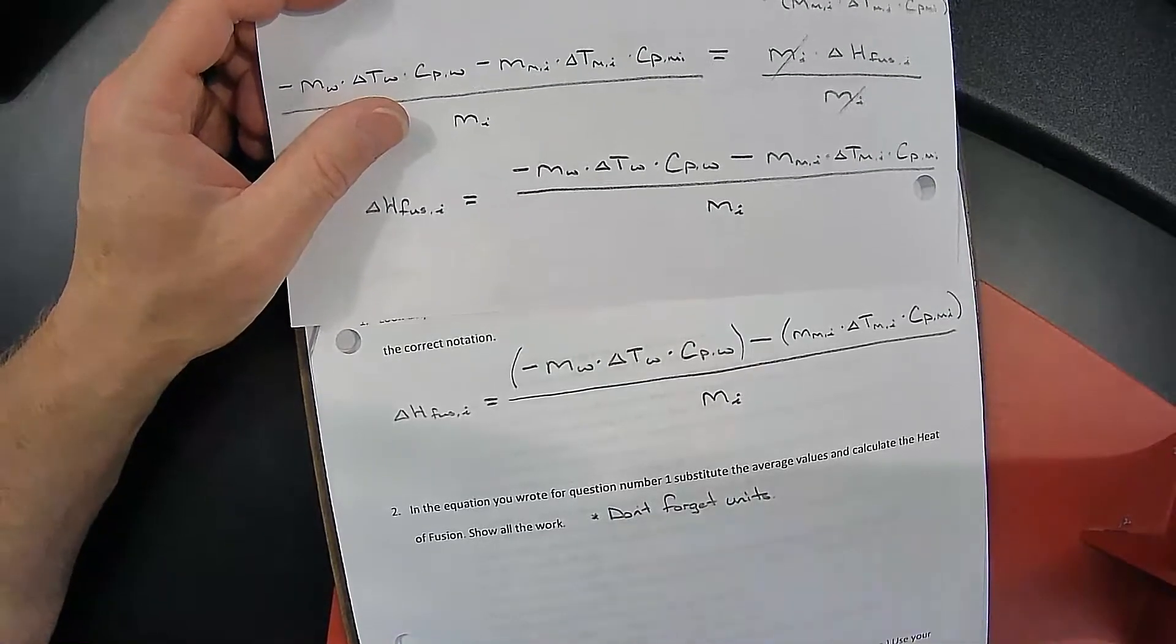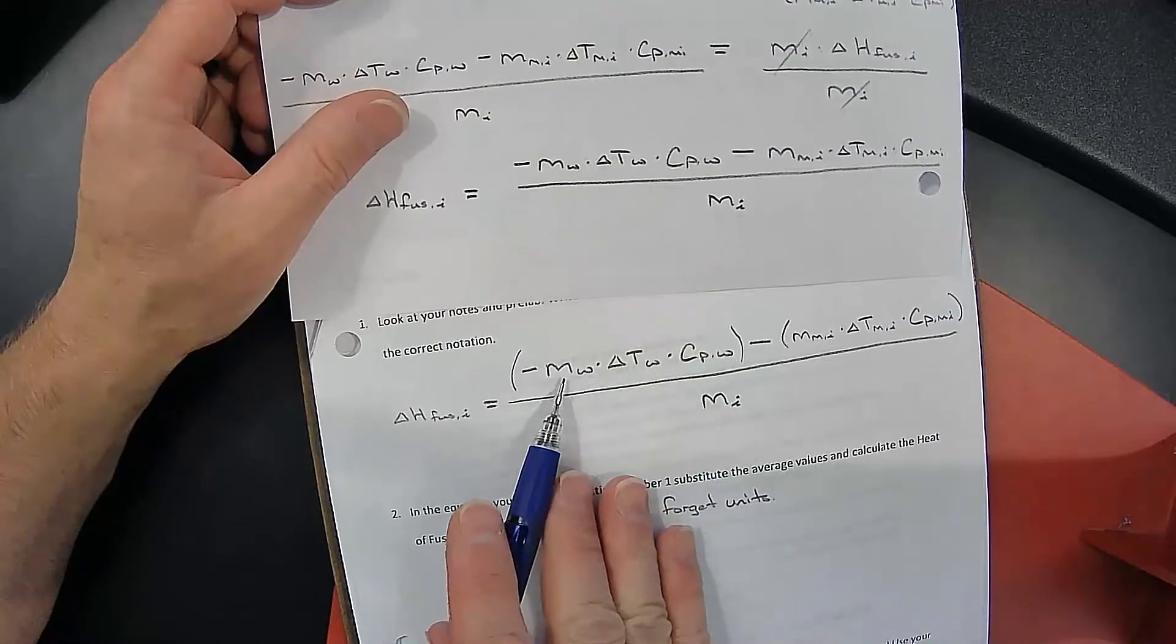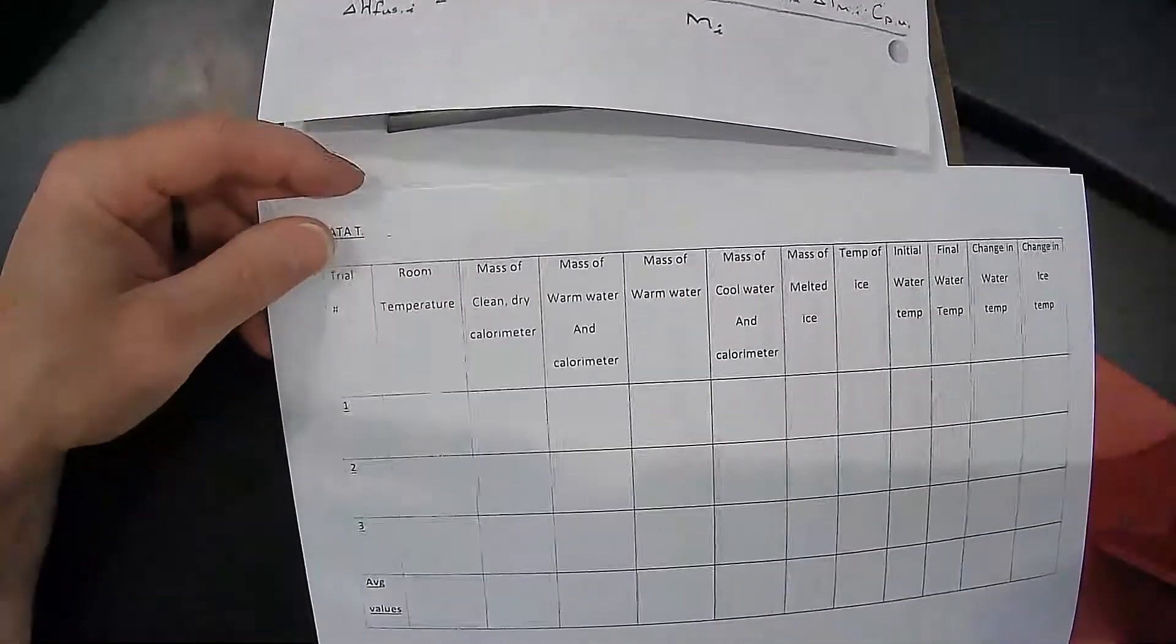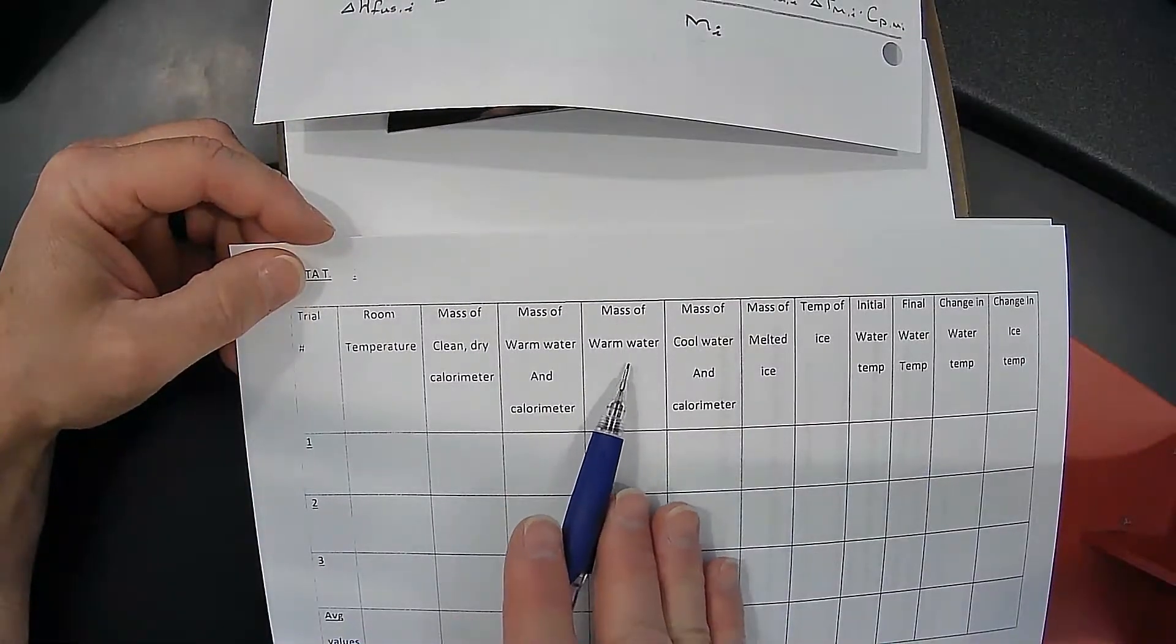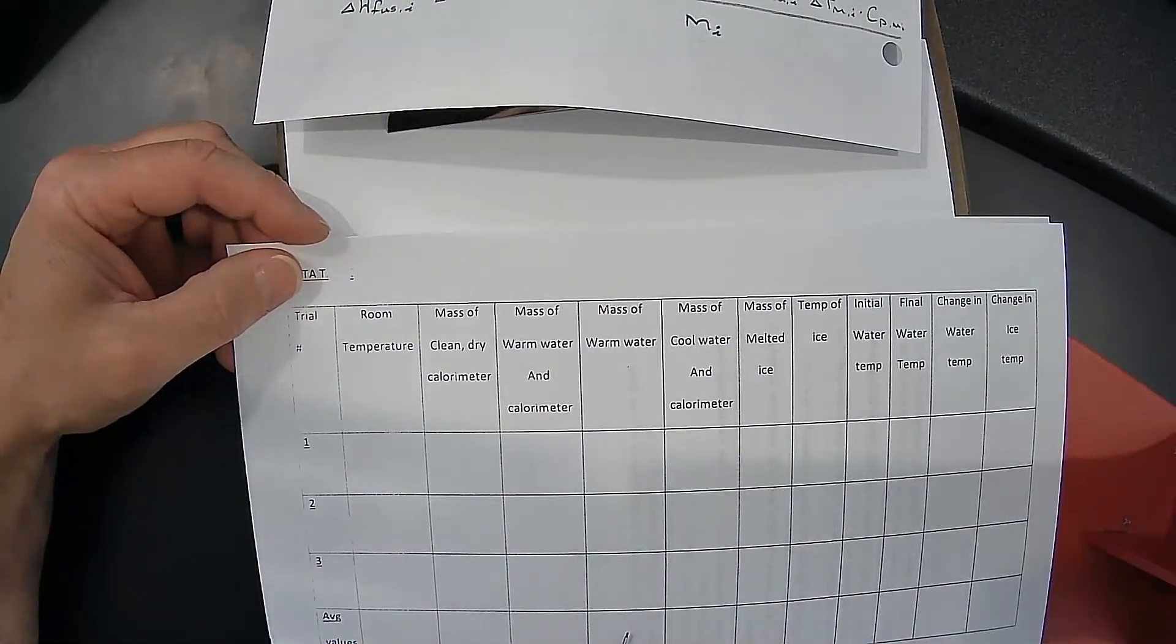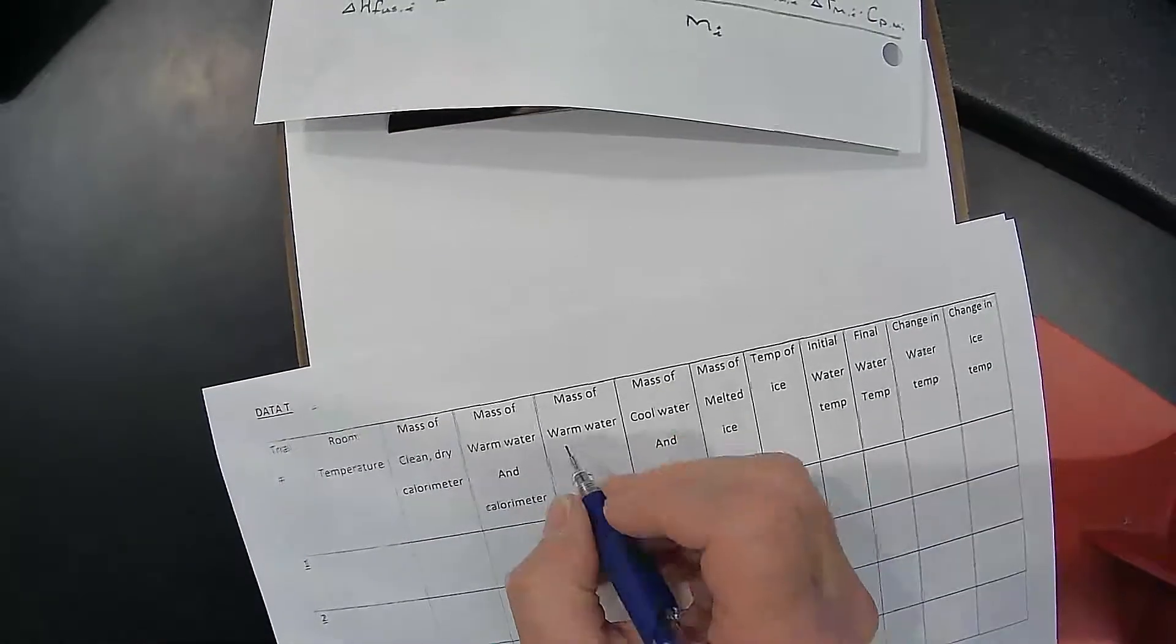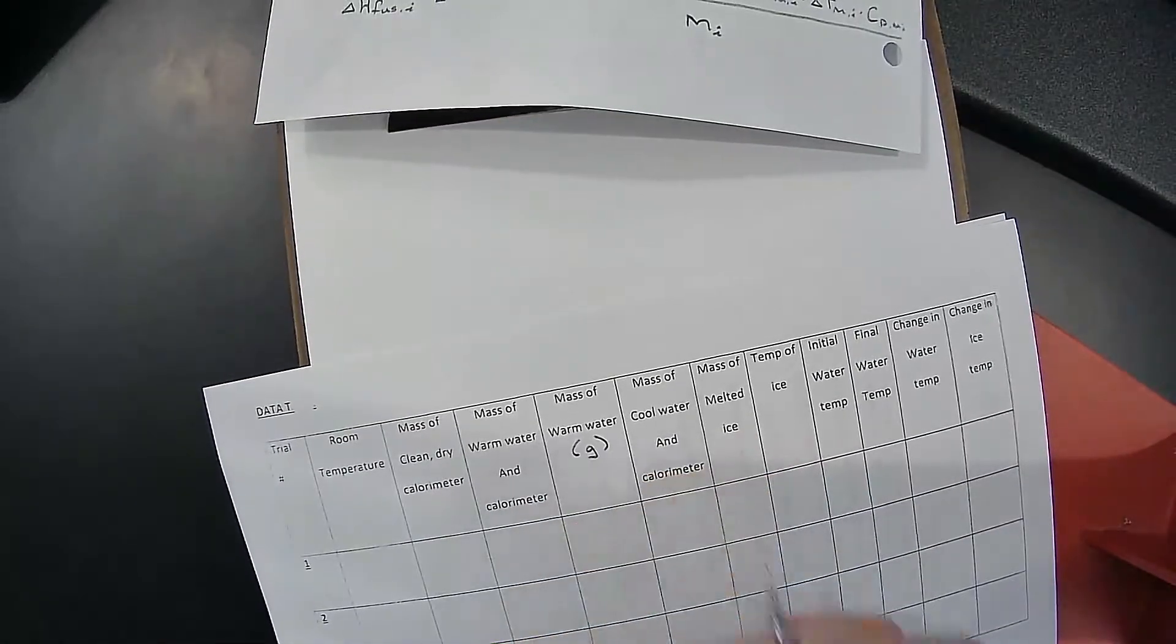Don't forget your units. The mass of the water will come from your data table where you found the mass of your warm water, and we'll be using the average values for these calculations. Mass of the warm water, and you have that in grams.